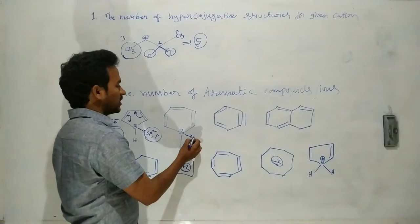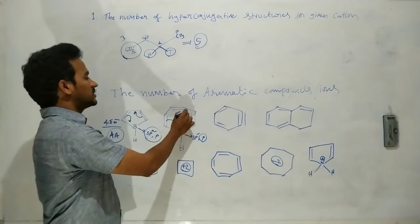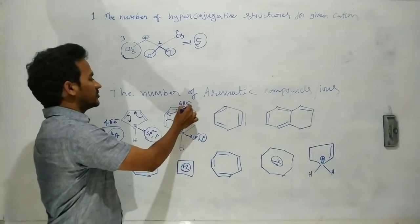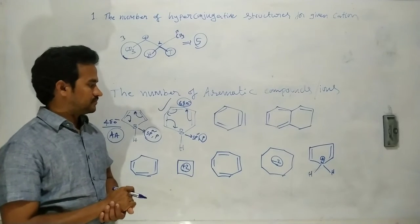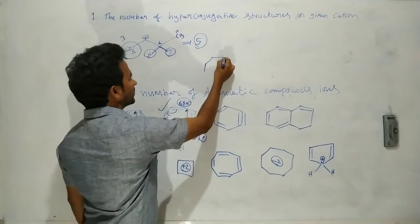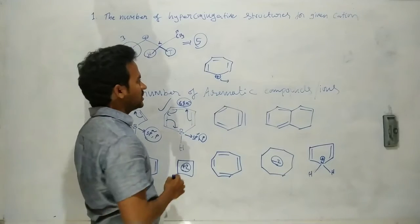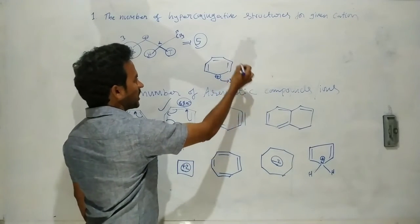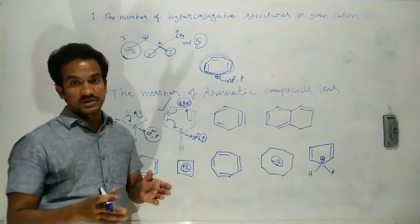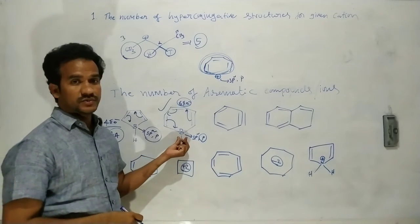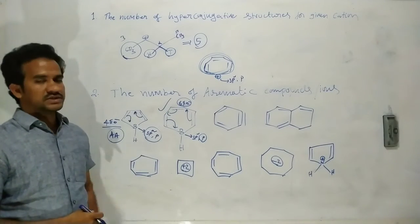The next ring again has sp2 hybridization at all atoms including a boron, which has a vacant p orbital. The pi electrons — six of them — are delocalized throughout the ring, satisfying the 4n+2 rule with n=1. That means it is an aromatic compound. Similarly, a carbocation in a ring (like the cyclopropenyl/propylium cation) has sp2 carbon with a vacant p orbital enabling continuous conjugation of 6 pi electrons, making it aromatic. A boron atom in such a ring also provides the vacant p orbital for continuous conjugation — also aromatic.